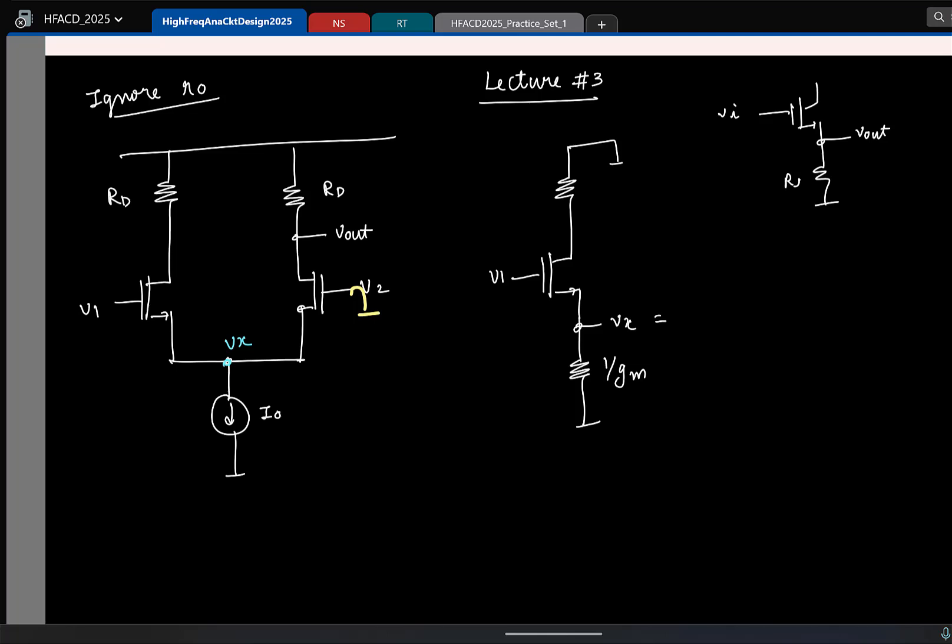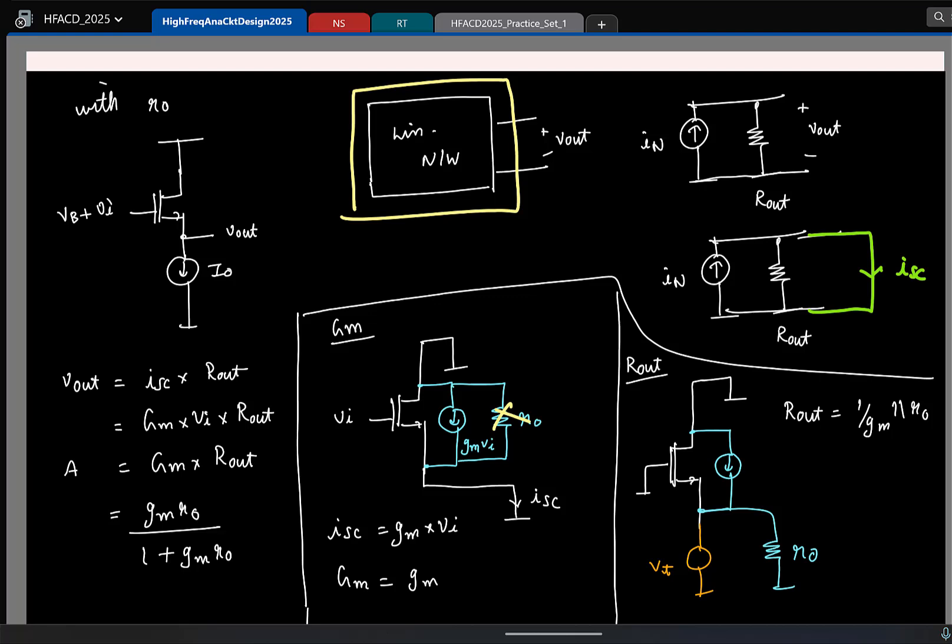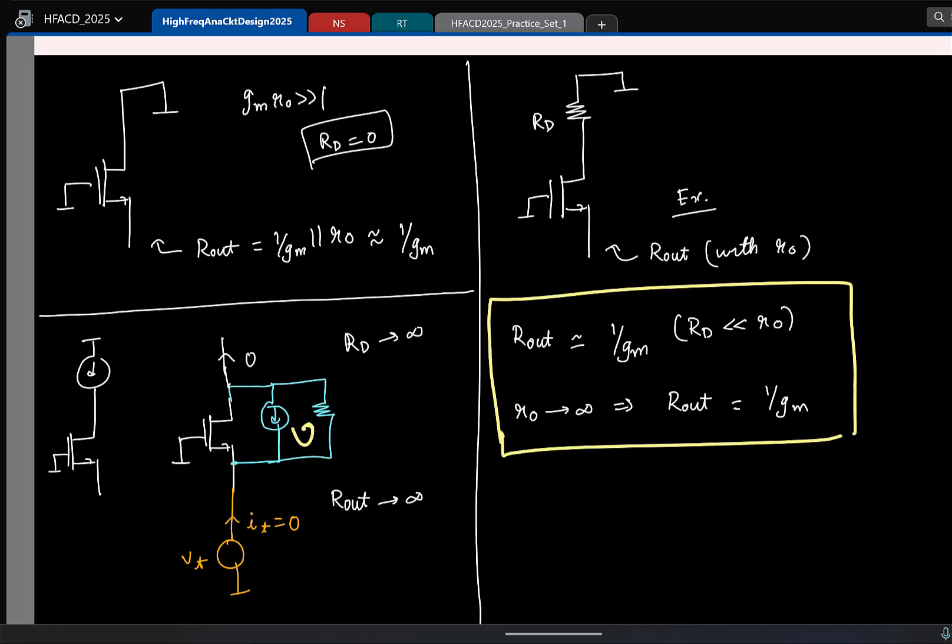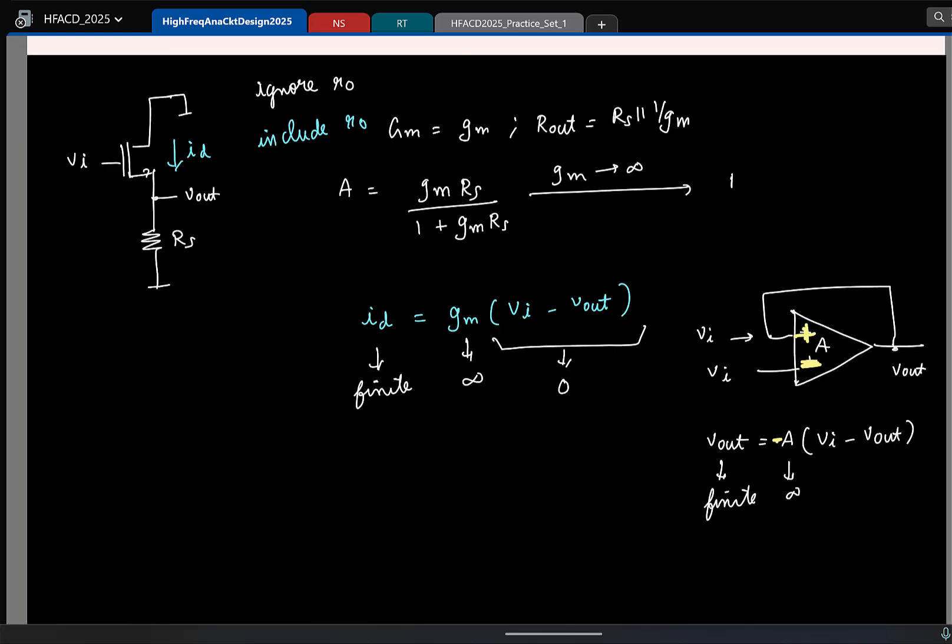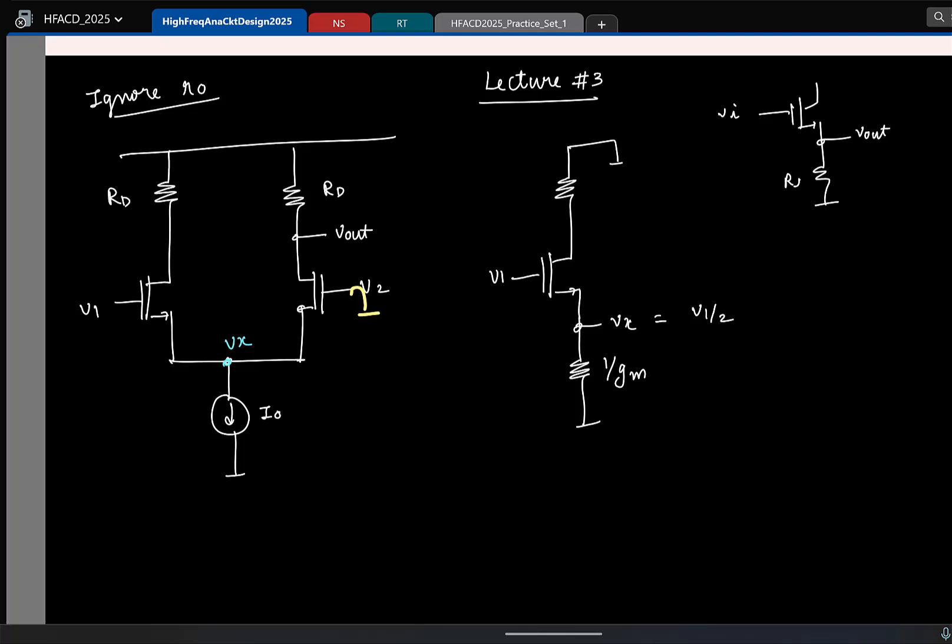So at the source I seem to have a resistance of 1 by gm. So now I seem to have a case where input is applied at the gate, output is tapped from the source, what configuration is this? Common drain. So I mean this is something again we did in the last class, if I have a resistor Rs, what was the Vout in terms of Vi, do you remember? gm times Rs by 1 plus gm Rs, again this is something that might be worth remembering.